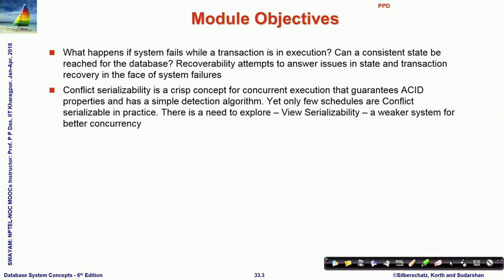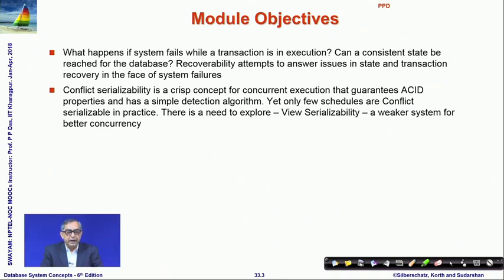We now bring in another perspective: what if, while a transaction is in execution, the system fails? The failure may be due to hardware, software, power outage, disk crash, and various other reasons. When that happens, the database is likely to come into an inconsistent state. We would like to discuss how to recover from that inconsistent state and bring it back to a consistent state.